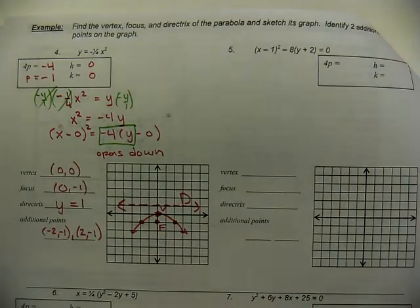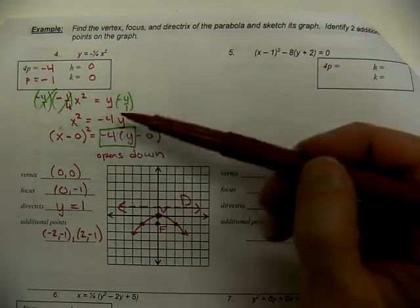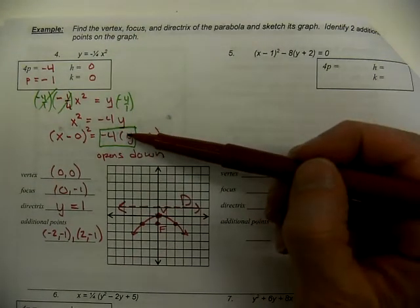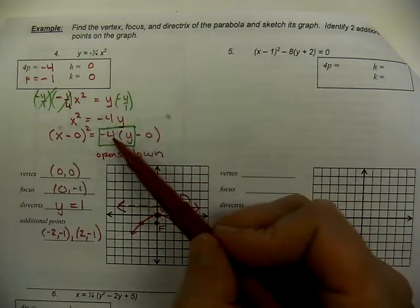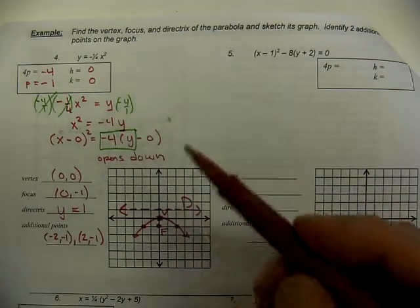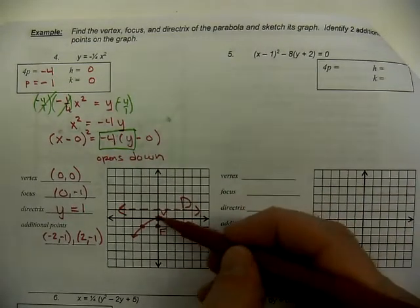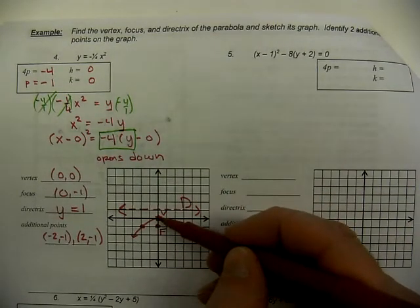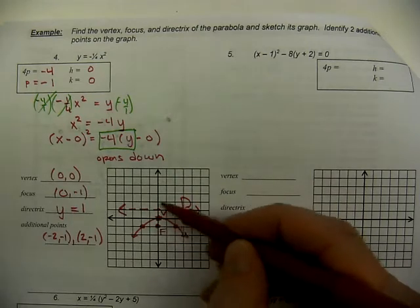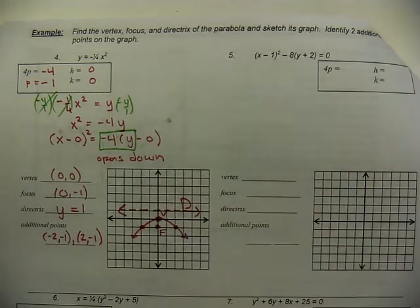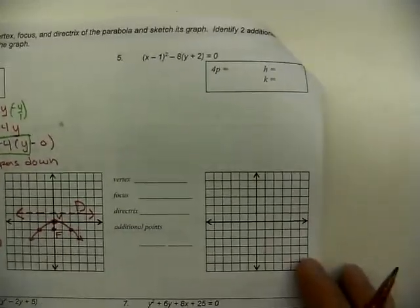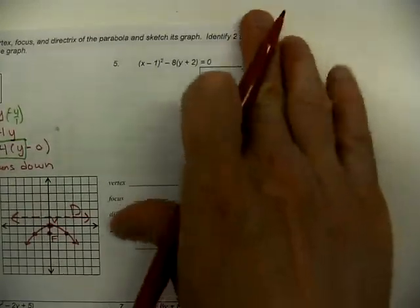So that's the sequence of steps: get the equation in standard form, identify the vertex H and K, identify P, then plot starting with the vertex. Using the value of P and the direction it opens, place the focus, directrix, and the two additional points.